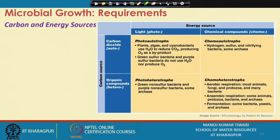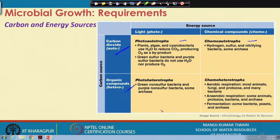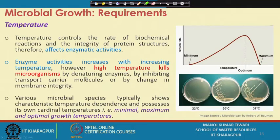Regarding carbon and energy sources: if the organism uses carbon dioxide as a carbon source it is an autotroph; if it uses organic compounds it is a heterotroph. If energy comes from light it is a photo-autotroph; from chemical compounds it becomes a chemo-autotroph. Similarly we have photo-heterotrophs and chemo-heterotrophs depending on what energy source and what carbon source the microbial consortia are using.